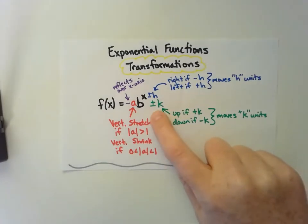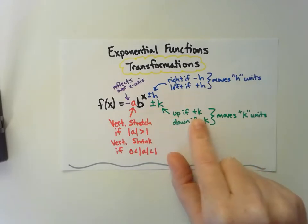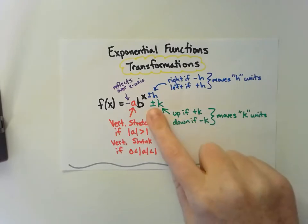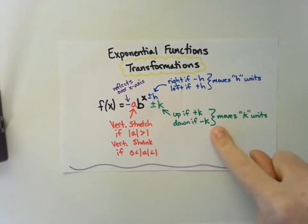If there's a number added outside the exponential part, not in the exponent, it makes it go up that many units. If it's subtracted, it goes down that many units.